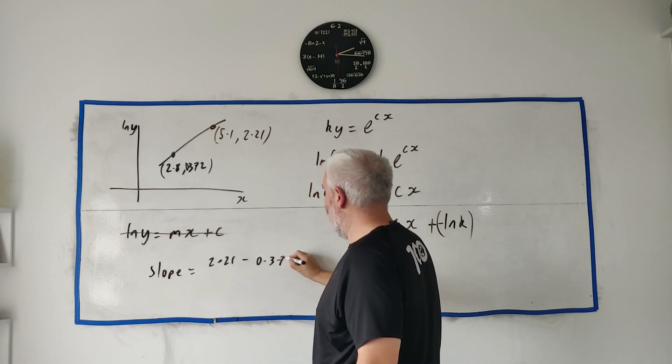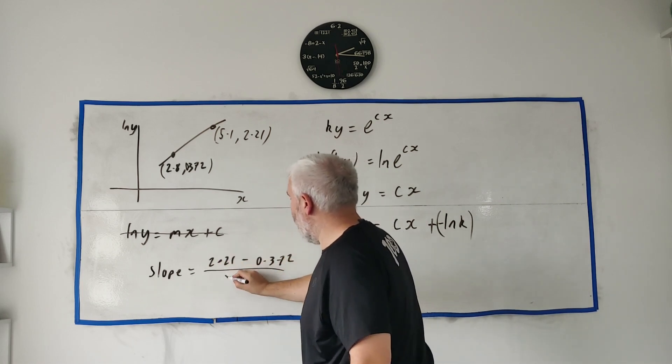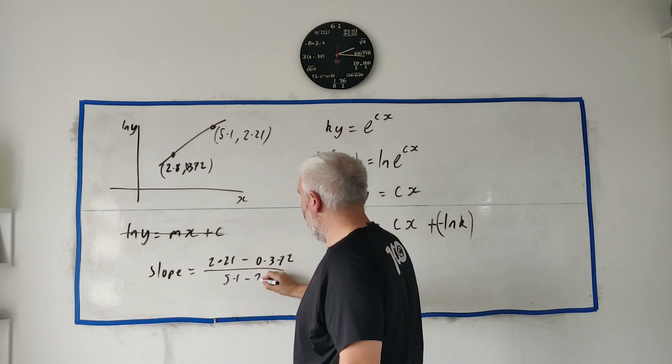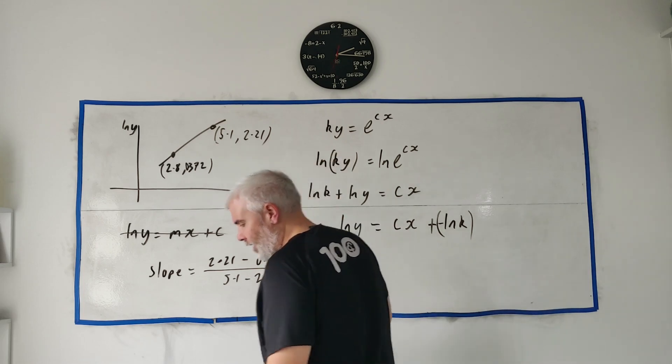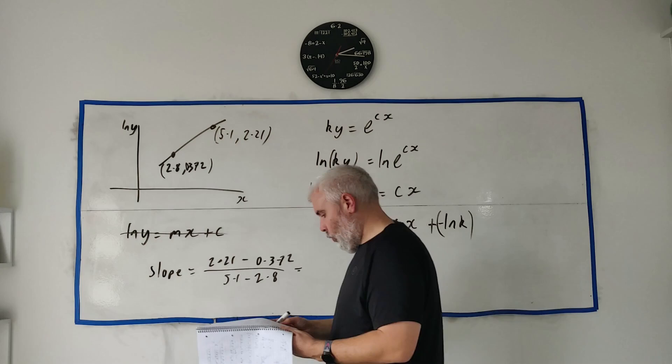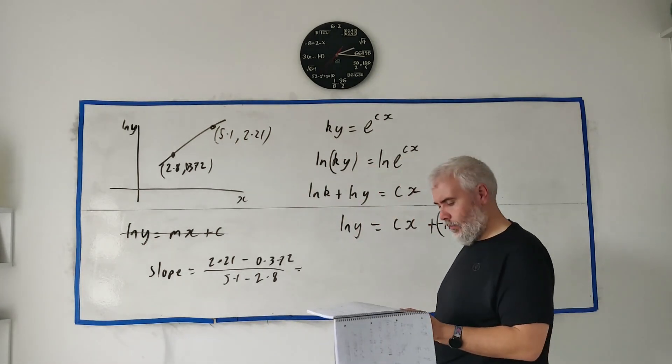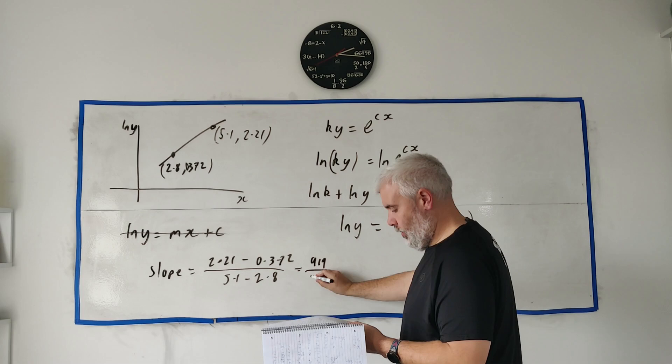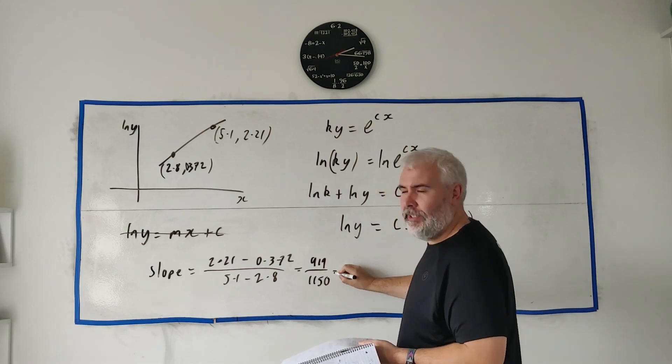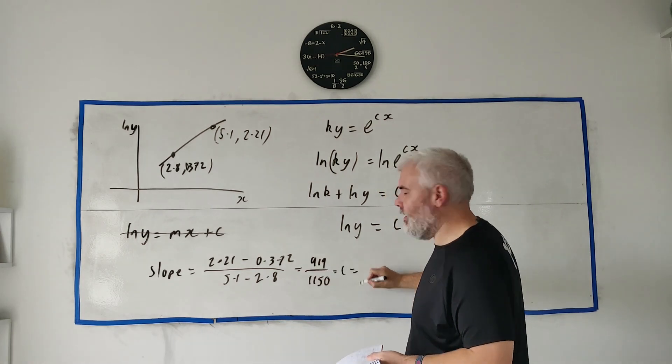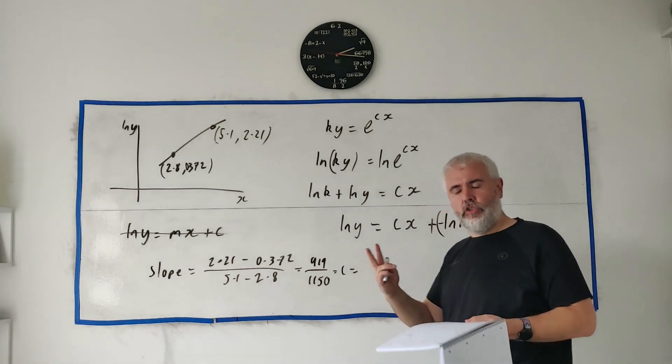If you put all that into a calculator we will get, yeah, we get 919 divided by 1150, but that's c, that's equal to c.